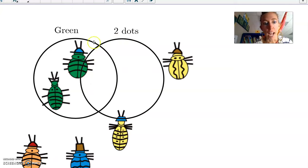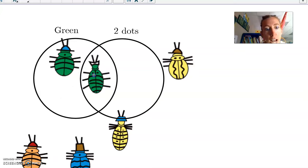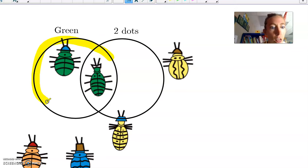And the reason we overlap is because the overlap would represent a beetle that is green and a beetle that has two dots. So this beetle is like, finally, I have a home and it's right here. It just feels so good. So that beetle you can now see exists in the green circle and it also exists in the two dots circle. So this spot right here is where we have a beetle that's green and a beetle that has two dots.